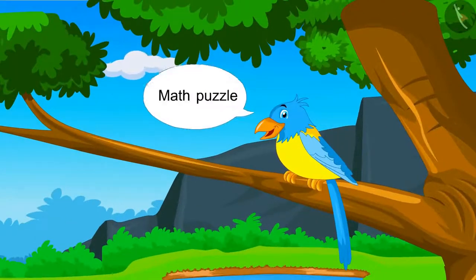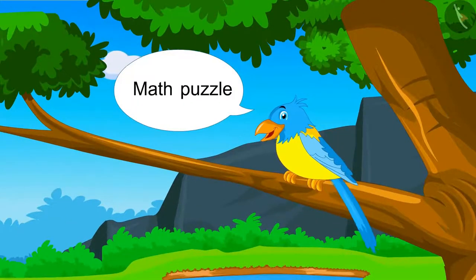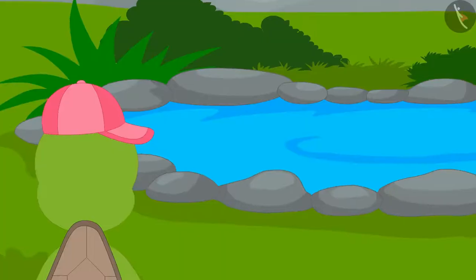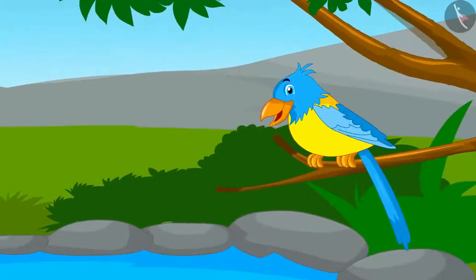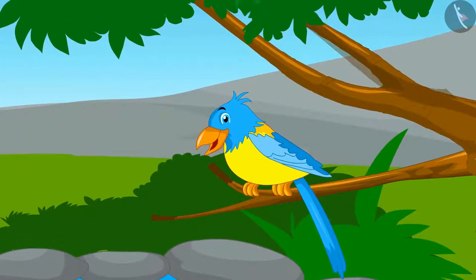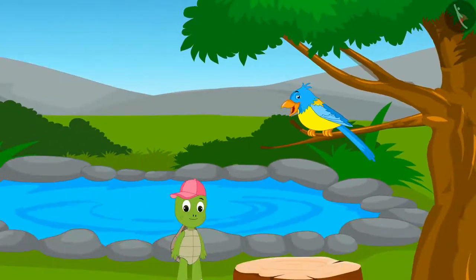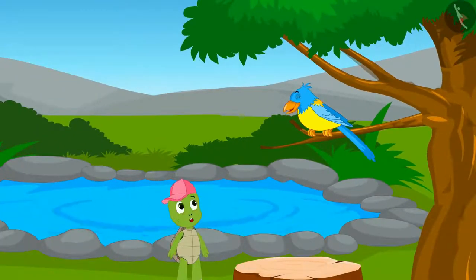But anyone who sees this bird has to solve a math puzzle to get his wish fulfilled. Tufan was moving towards his pond when the magical bird called him. 'Tufan, I can fulfill your wish but you have to solve one of my math puzzles first.'